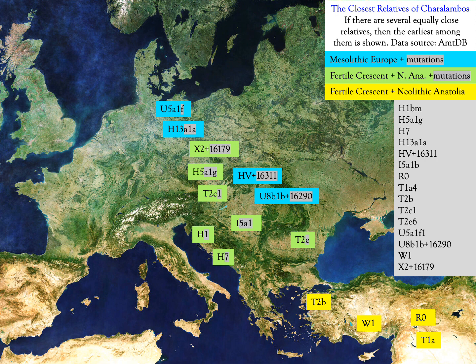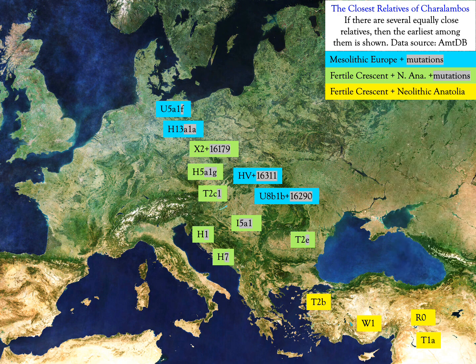This map shows the closest relatives of the Kharalambos samples. Four of them have a Mesolithic origin, while seven of them have a Fertile Crescent origin but are found in Europe. However, all of these samples have undergone some mutations from their Mesolithic origins or since leaving the Fertile Crescent — these mutations are highlighted in grey. The currently available data allows the possibility that some Middle Minoans came from the Fertile Crescent, while others came from Europe, mostly from the Danube Basin and nearby areas.